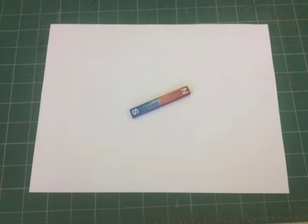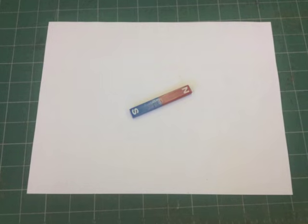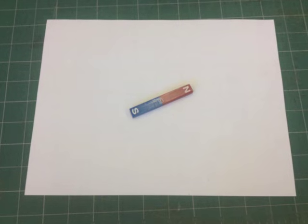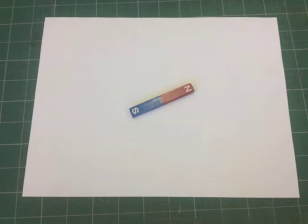Magnetic fields can be tough for students to conceptualize, but with the help of a magnet, a piece of clear glass or plastic, and iron shavings, you can be on your way to helping students better visualize the magnetic field all magnets create.